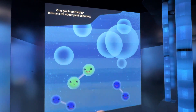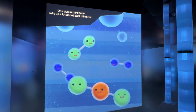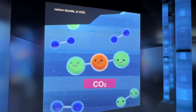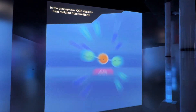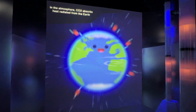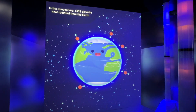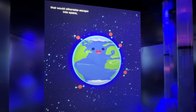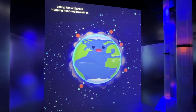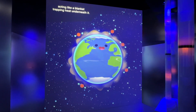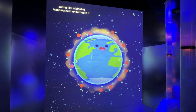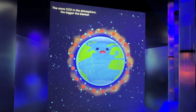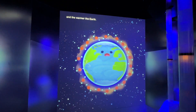One gas in particular tells us a lot about past climates: carbon dioxide, or CO2. In the atmosphere, CO2 absorbs heat radiated from the Earth that would otherwise escape into space, acting like a blanket trapping heat underneath it. The more CO2 in the atmosphere, the bigger the blanket and the warmer the Earth.